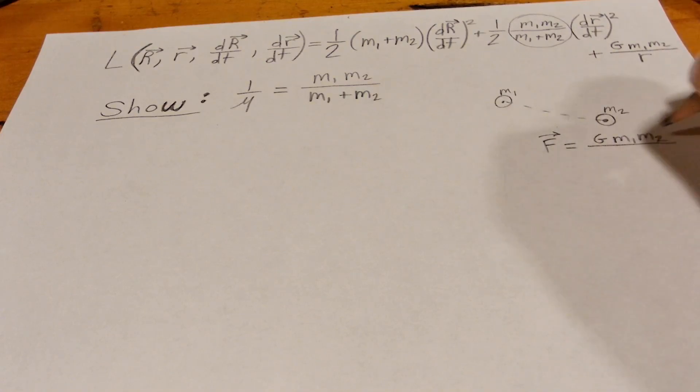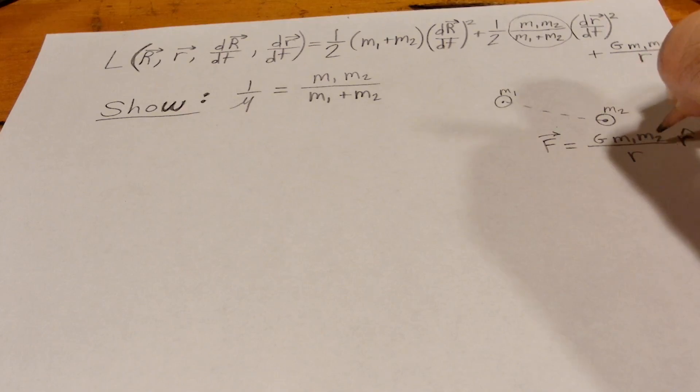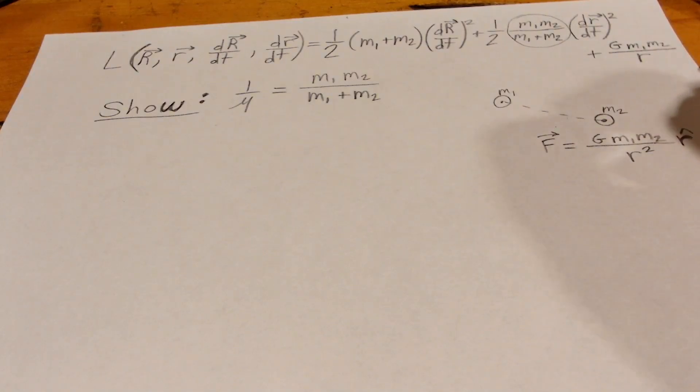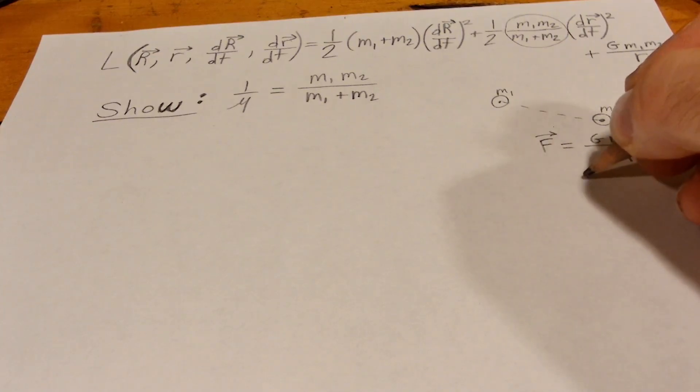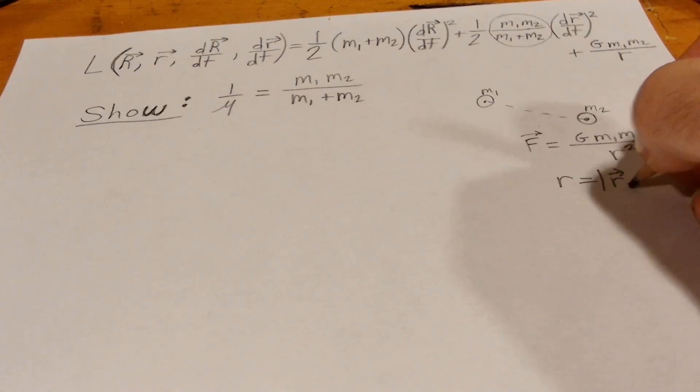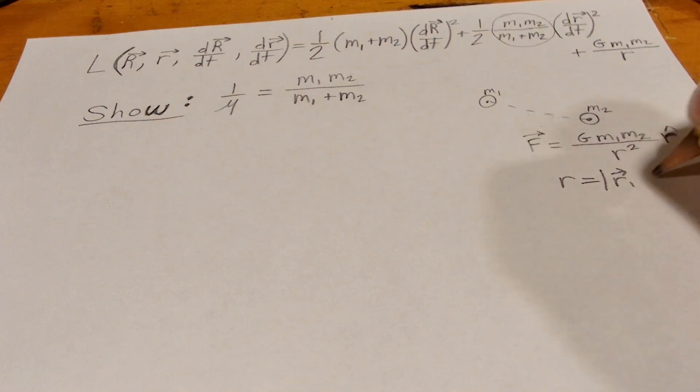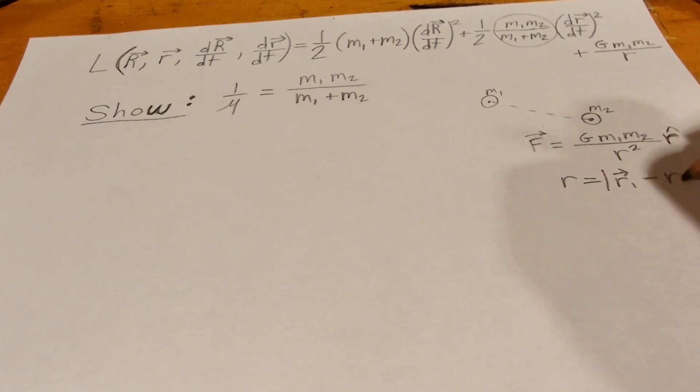Mass of m1, mass of m2 in the r hat direction over the distance between them. And also this r is a magnitude and we can represent the magnitude r as the position vector of mass 1, r1, minus the position vector of mass 2, r2. Now give us the magnitude.